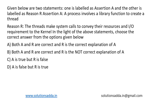This is a question from operating systems. Given below are two statements — one is Assertion A and another is Reason R. The assertion A states: a process involves a library function to create a thread. The reason R states: threads make system calls to convey their resources and I/O requirements to the kernel.